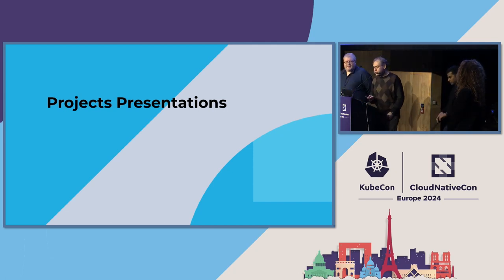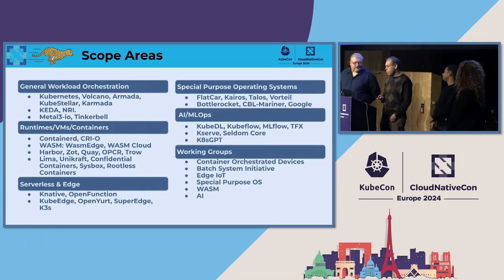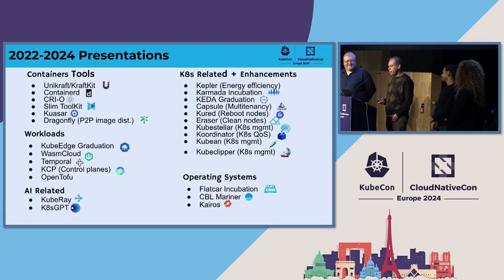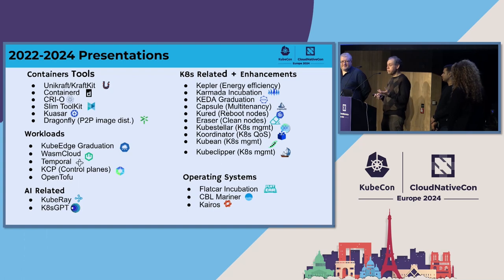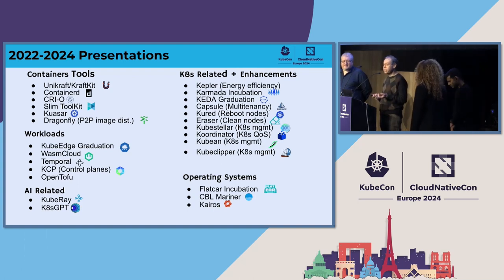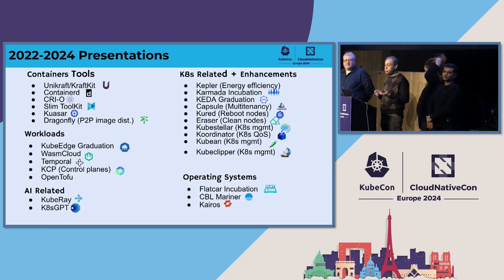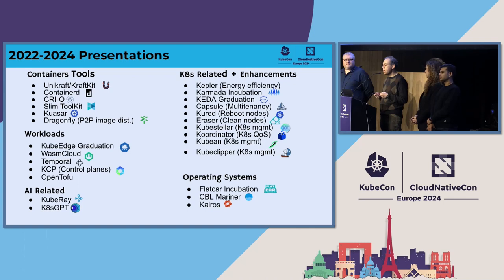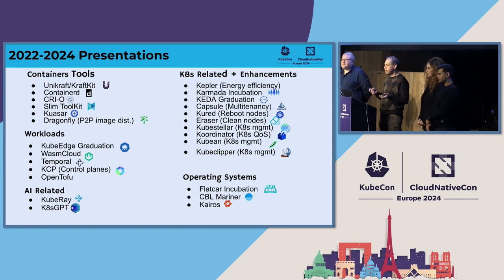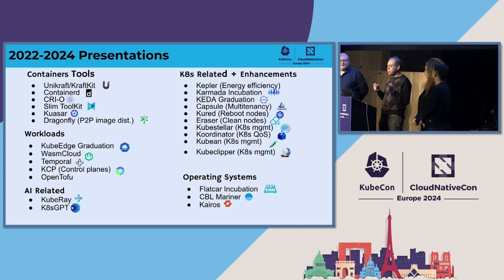A little bit about some of the project presentations we've had in the TAG. We have a variety of different tools and projects. In terms of containers, we've had things like CRI-O and containerd. We have things like the kubectl graduation, OpenTofu which is an open source fork of HashiCorp Terraform, KDA for cluster autoscaling, Kubstellar for Kubernetes management, and Kubclipper also for Kubernetes management.